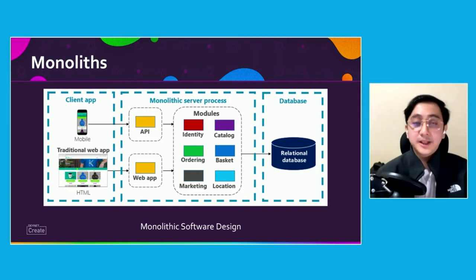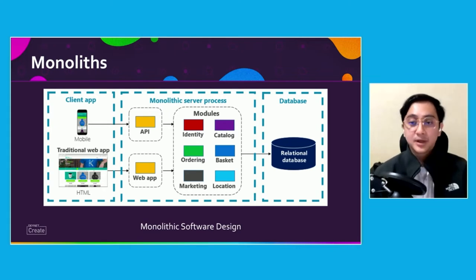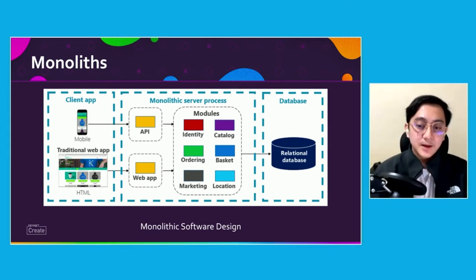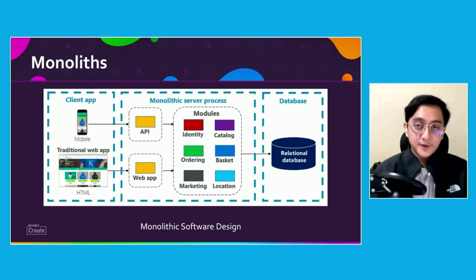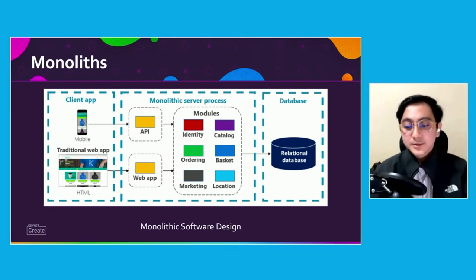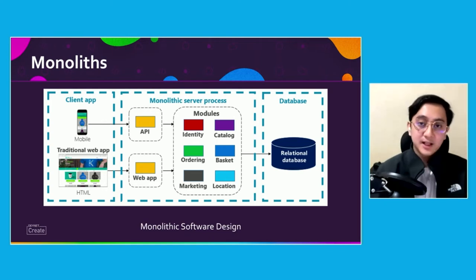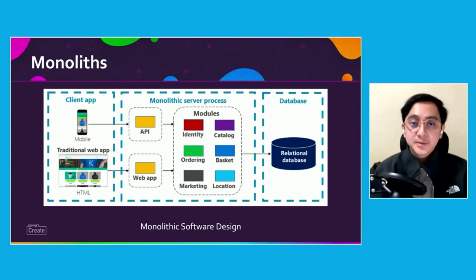Now this is all well and good — monolithic apps do have distinct advantages. They're easier to build and easy to test because of that one core structure. But even with those advantages, they do have problems. A lot of successful apps did start as monoliths, but as the application continues to evolve and improve, it becomes more complex. At some point, all the added functionality and features might just be too much — it becomes harder to scale and harder to implement.